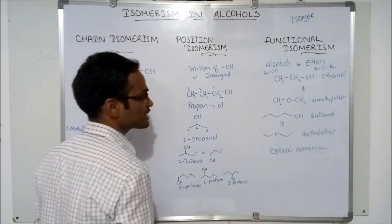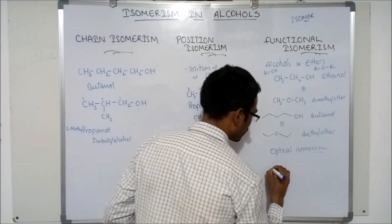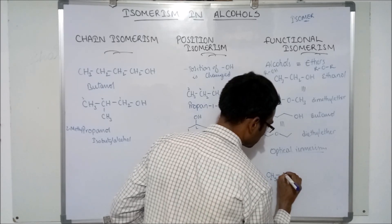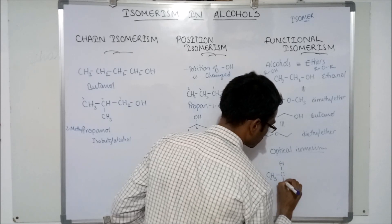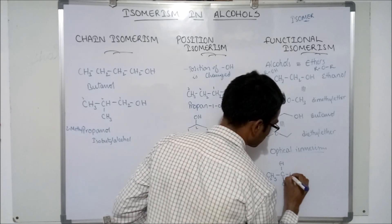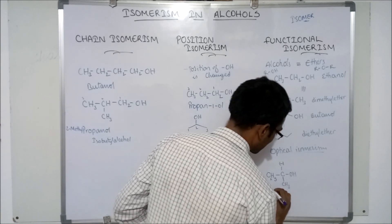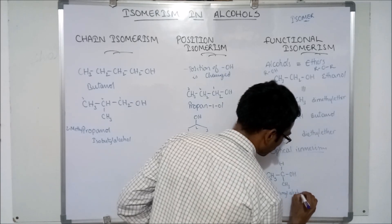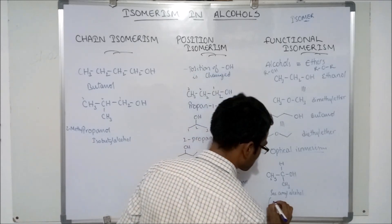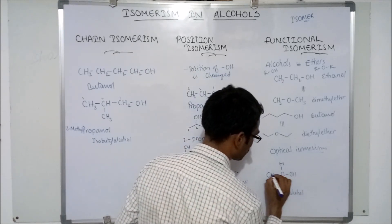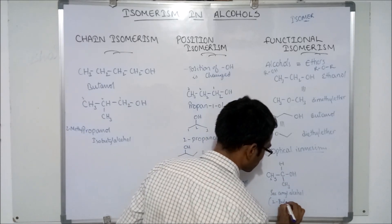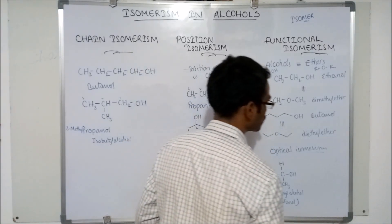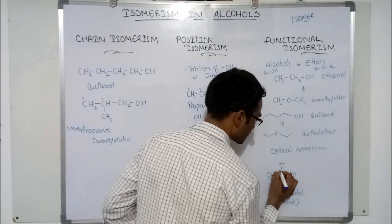That means, if there is a chiral carbon, it will exhibit optical isomerism. For example, C2H5-CH(OH)-CH3 — that is secondary amyl alcohol, also known as 2-butanol. 2-butanol will exhibit optical isomerism because it has a chiral carbon.